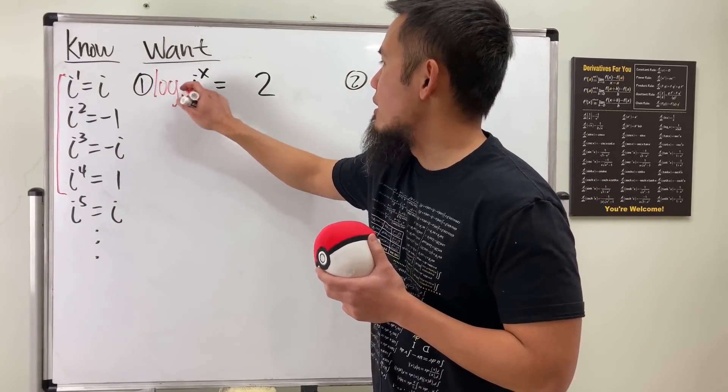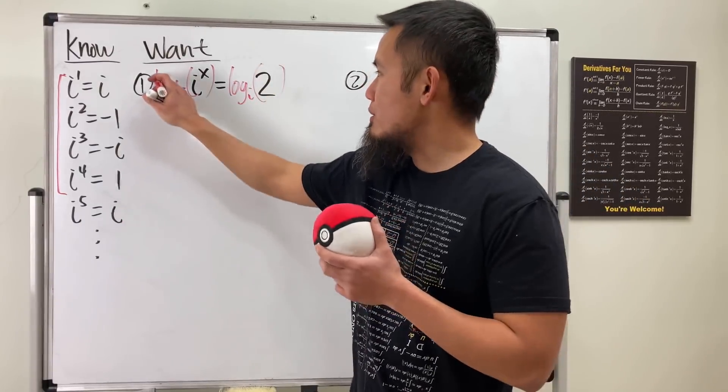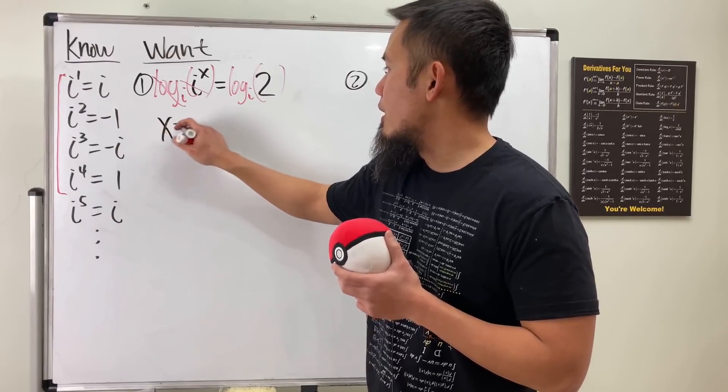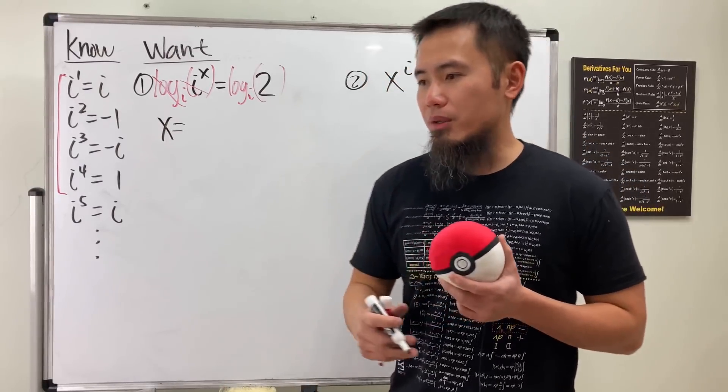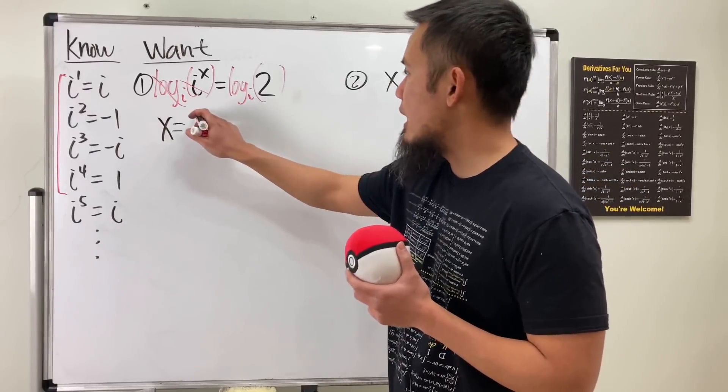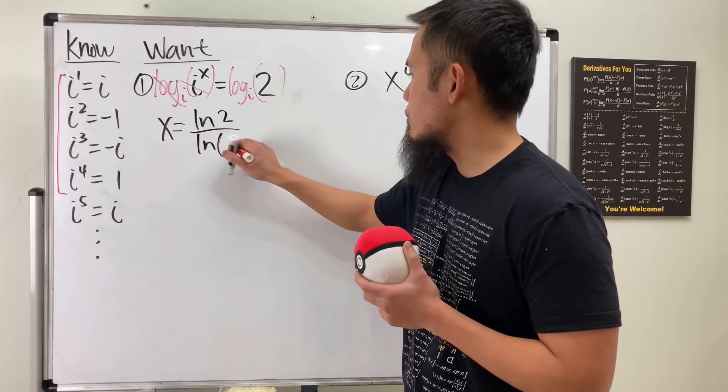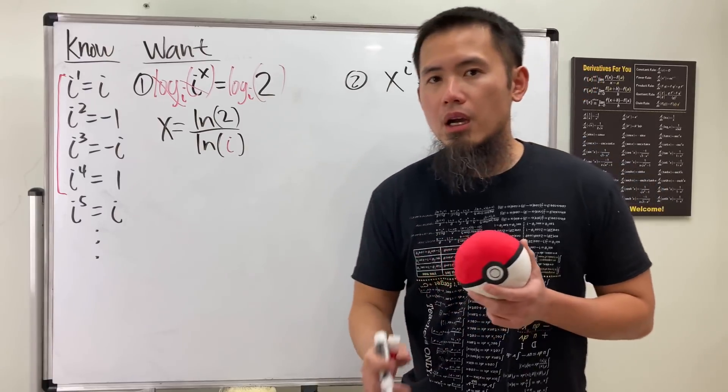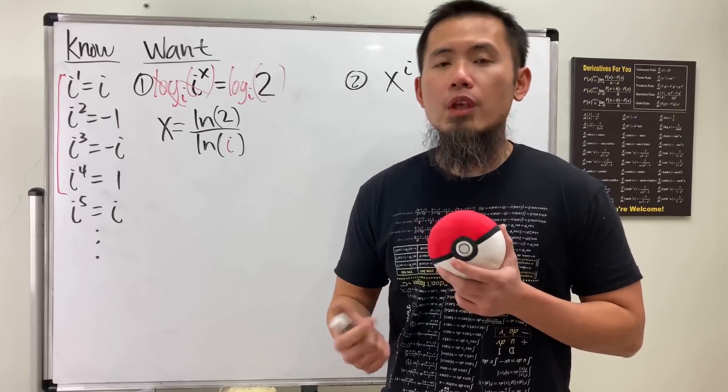Let's get started with this one. First, it's actually not so bad. You take the log with base i on both sides, and then you can cancel this out. Very nice. So we just get x by itself. And now on the right-hand side, let's use the change of base formula. We're talking about the complex logarithm, and we'll use the ln.